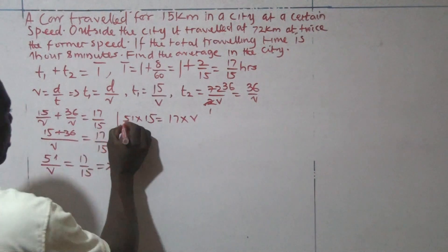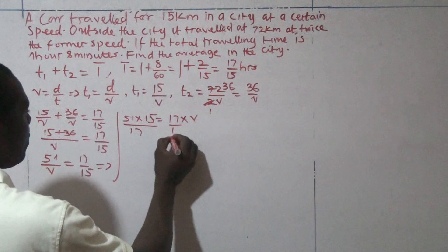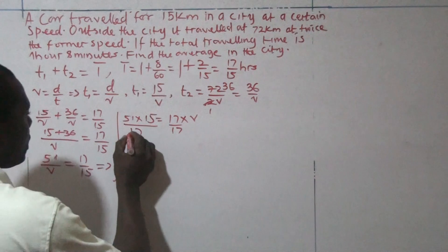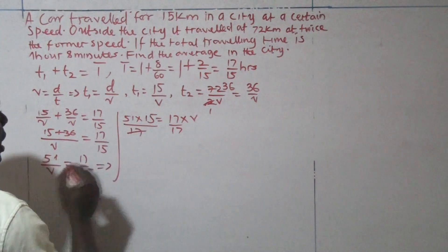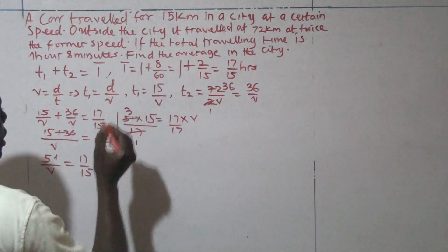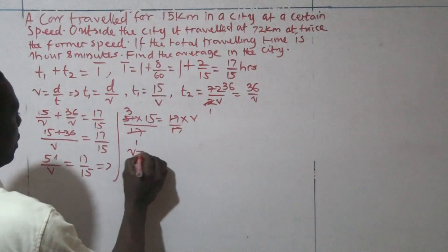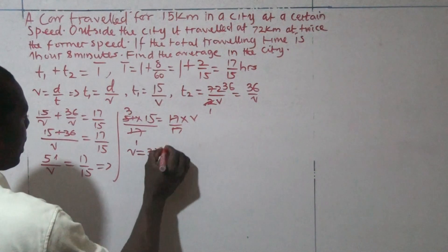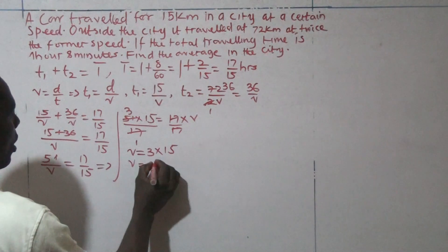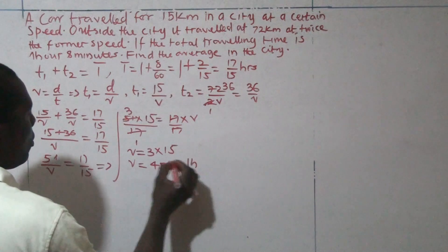The next step is to divide both sides by 17, because our interest is we are looking for the speed. So here, 17 can go into 51, 17 in 51 is 3. So V is equal to 3 times 15, so that the speed there will become 45 kilometers per hour.